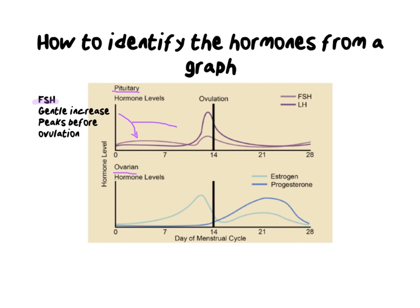FSH does a dramatic peak just before ovulation. The reason is simple: you need a little extra surge because the FSH finally forces the egg to be released. There are lots and lots of FSH, which means the follicle is ready — now we need to push it out of the ovary and into the fallopian tube. So FSH peaks just before ovulation, which is what you look for — a slightly lower-level hormone that peaks just before ovulation.